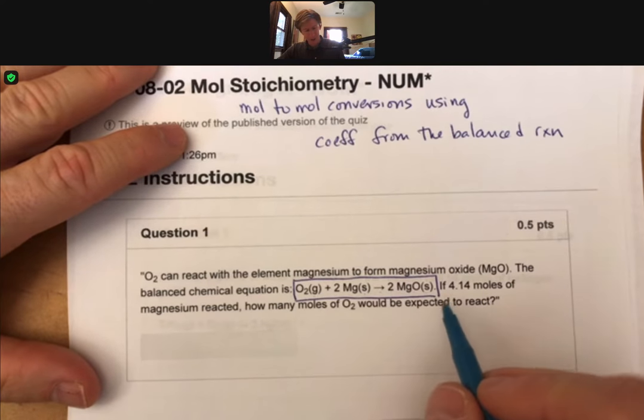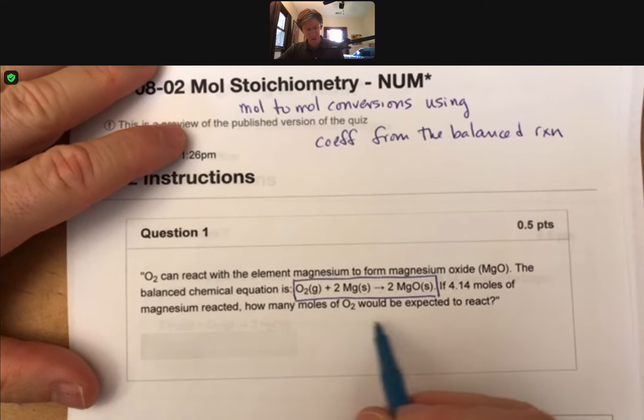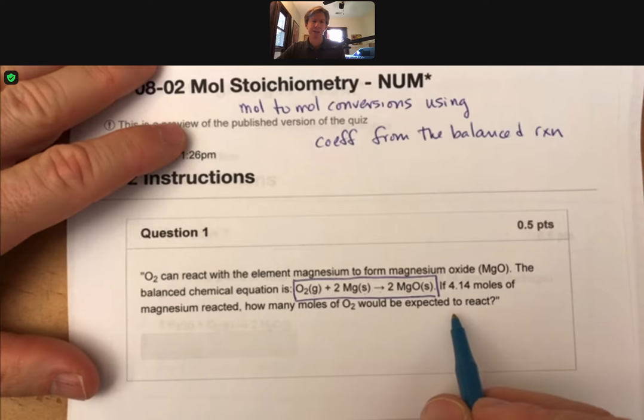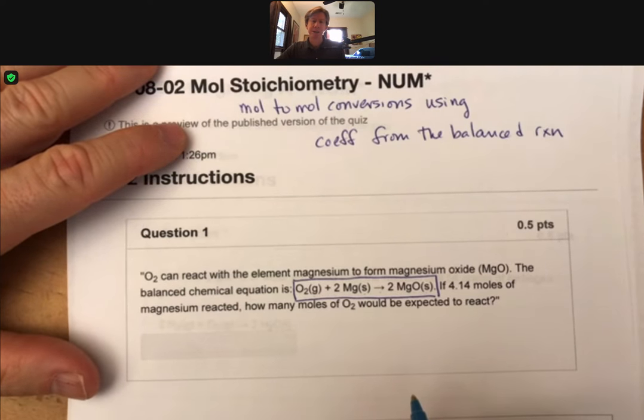In particular, that's because it says if we have 4.14 moles of magnesium reacted, how many moles of oxygen would be expected to react. So from the coefficients we'll construct our mole-to-mole conversion.